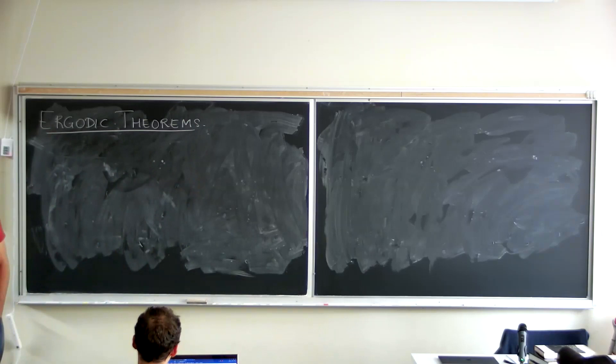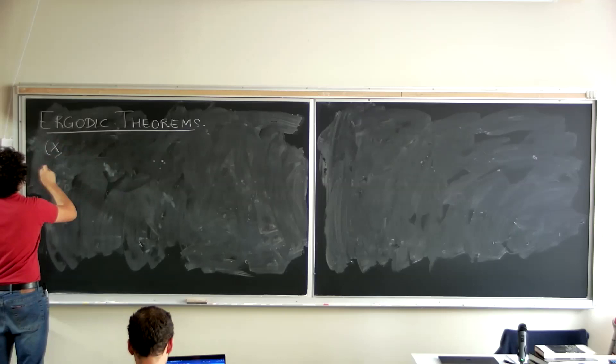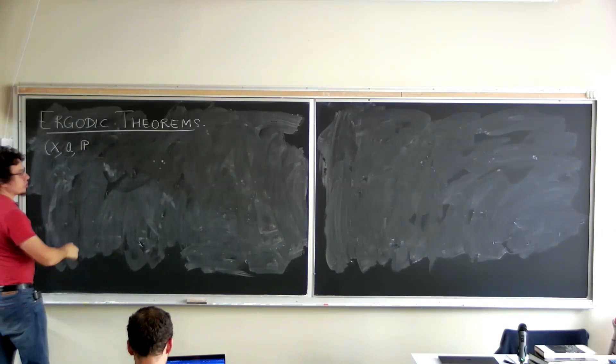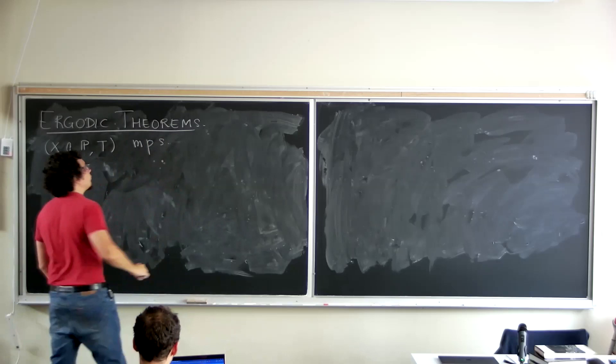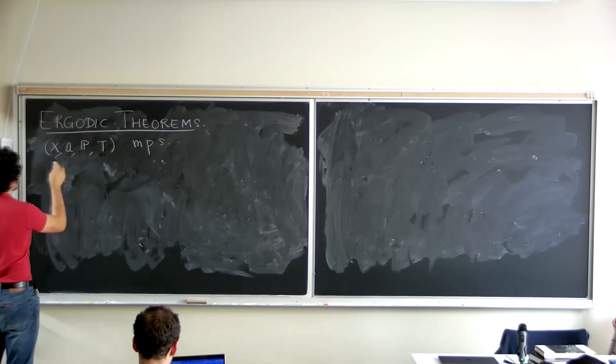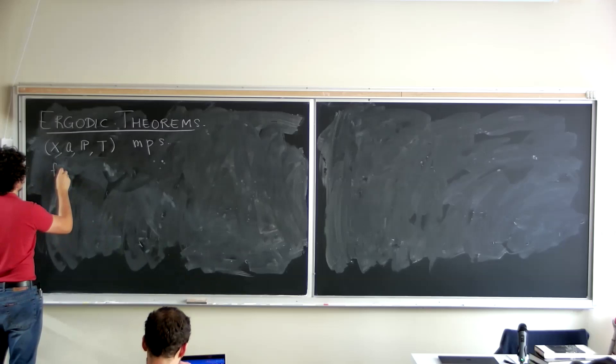So what are ergodic theorems? The setting, in general, would be that you have a measure-preserving system — sigma algebra, probability measure, and transformation. There are two types of theorems. The first two theorems of von Neumann and Birkhoff have to do with a function from X to R, which is usually called an observable.